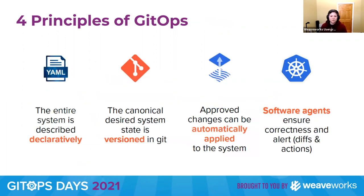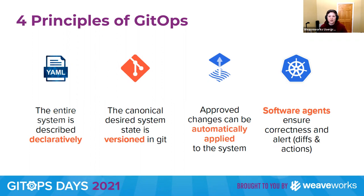The principles of GitOps: not everybody has all four. Whether you're using Git as your versioning system or not, the most important thing is that you're using a versioning system. Other principles are having a declarative system, having a way in which changes are automatically applied to that system, and having ways of reconciling and ensuring correctness with alerts. Please send any questions into the chat.